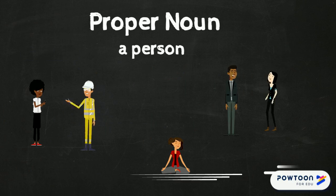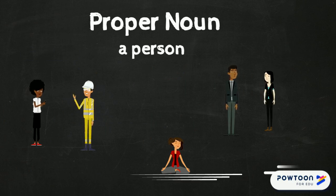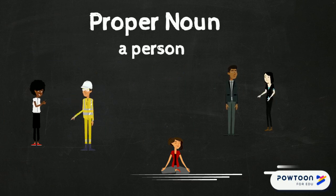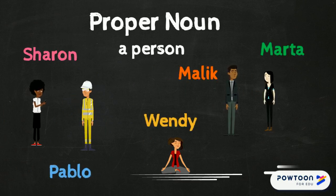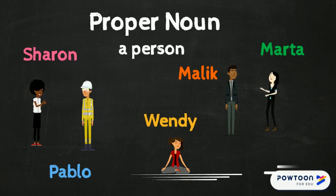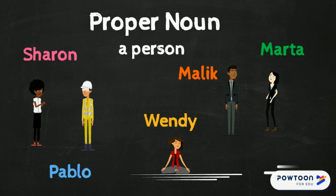Proper nouns are the specific names or proper names that we give things. For example, here we have Sharon, Pablo, Wendy, Malik, and Marta. Notice that their names are capitalized. Since proper nouns are specific names, they are always capitalized.